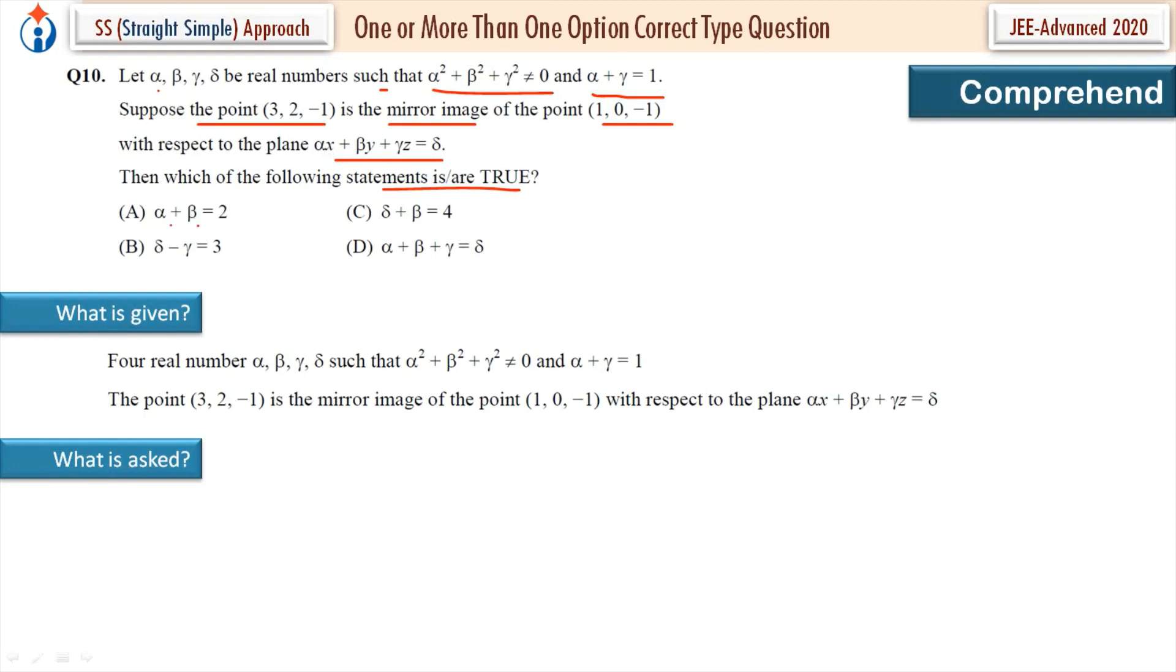So these four options are relations between α, β, γ, δ. Two statements out of these four statements - more than one option correct.